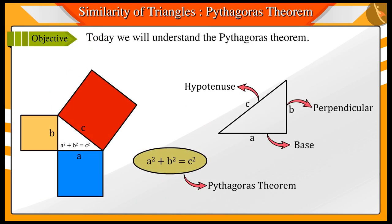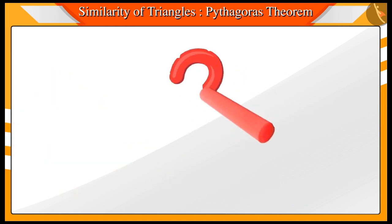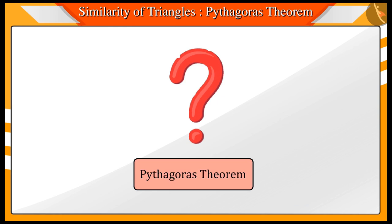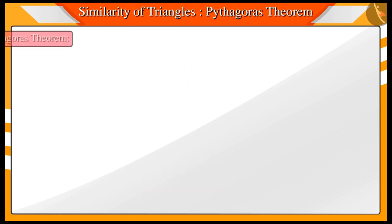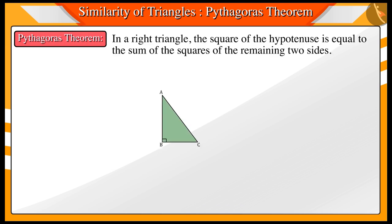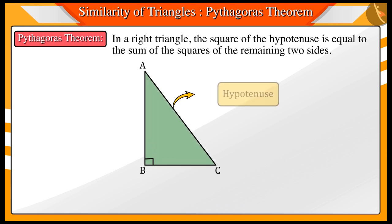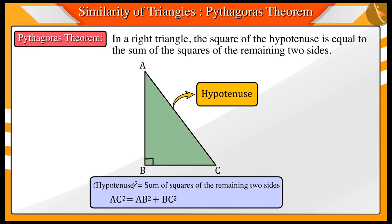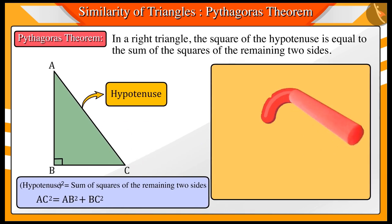Today, we will understand Pythagoras' Theorem with its help. Can you tell from the previous class what is Pythagoras' Theorem? Absolutely correct. According to Pythagoras' Theorem, in a right-angled triangle, the square of the hypotenuse is equal to the sum of squares of the remaining two sides.